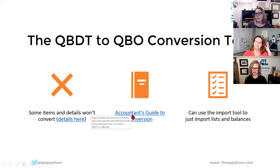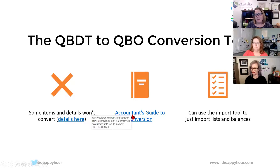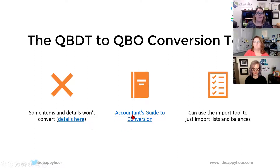To export from QuickBooks Online back to Desktop, go to the gear, then tools, then export data. We're going to briefly touch on some tricks and tips you may not know when using these tools, then dive right into Transaction Pro. The QuickBooks Desktop to QuickBooks Online Conversion Tool — some items and details are not going to convert. I've put a link here to an article that tells you exactly what will go over from Desktop to Online, so you can refer to that. I've also included an accountant's guide to conversion that Intuit has put out.